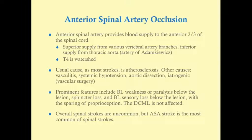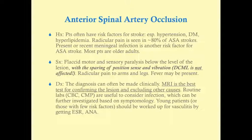Regarding the history of patients with ASA stroke: most have the classic risk factors for stroke — hypertension, diabetes, and hypercholesterolemia. Interestingly, unlike other strokes, ASA stroke is associated with radicular pain, meaning pain distributed to specific dermatomes. Radicular pain is therefore a frequent finding in anterior spinal artery stroke that is not commonly seen in cerebral artery strokes. Another risk factor is a present or recent meningeal infection.